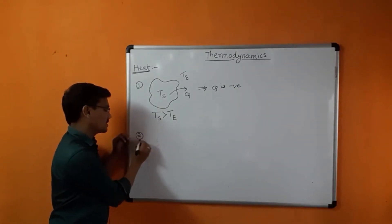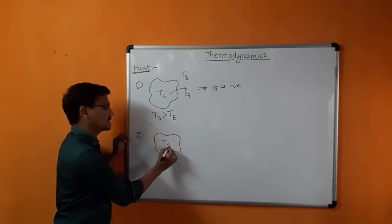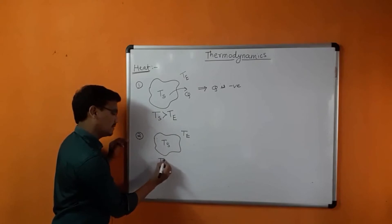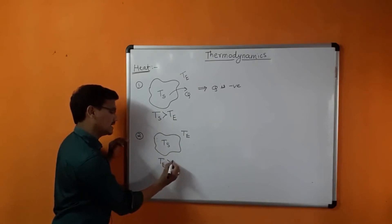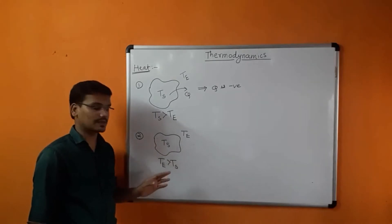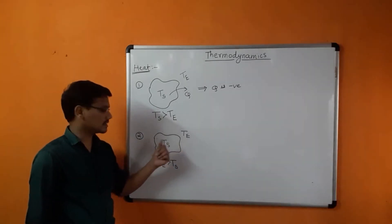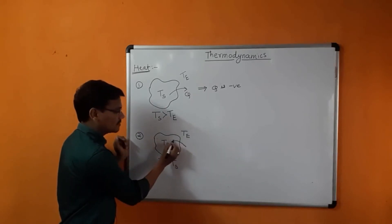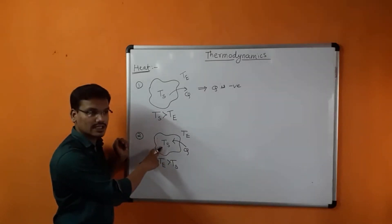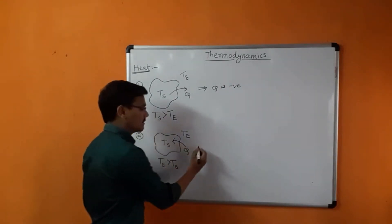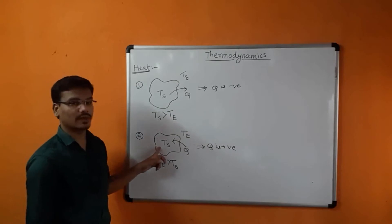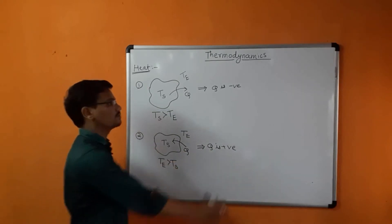Second case: again consider a system. Ts is the temperature of the system and Te is the temperature of the surrounding or environment. If the temperature of the surrounding is greater than the temperature of the system, heat is transferred from the object at higher temperature to the object at lower temperature. Higher temperature means surrounding; lower temperature means system. Therefore, heat is transferred from surrounding to the system. The temperature of the system increases and the heat content of the system also increases. Therefore, in this case, Q is positive because heat is absorbed by the system.